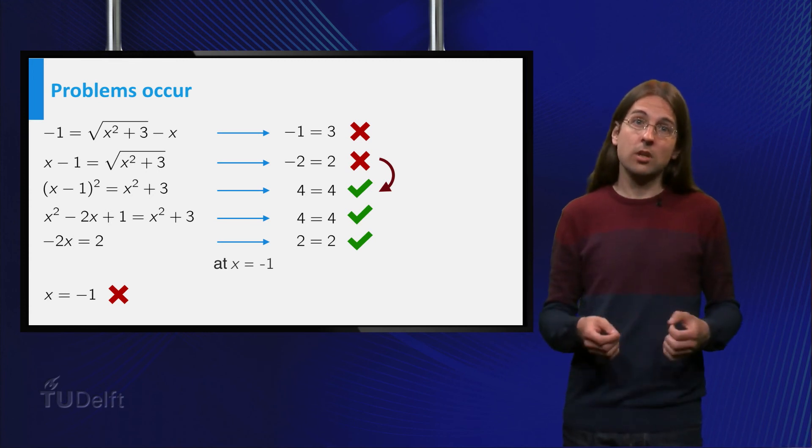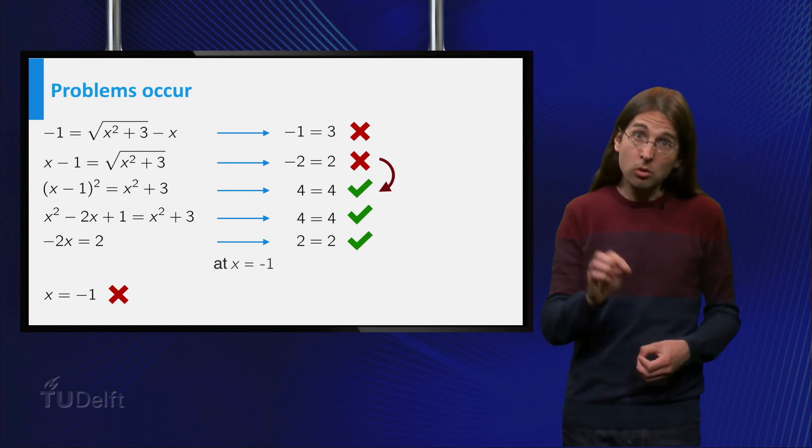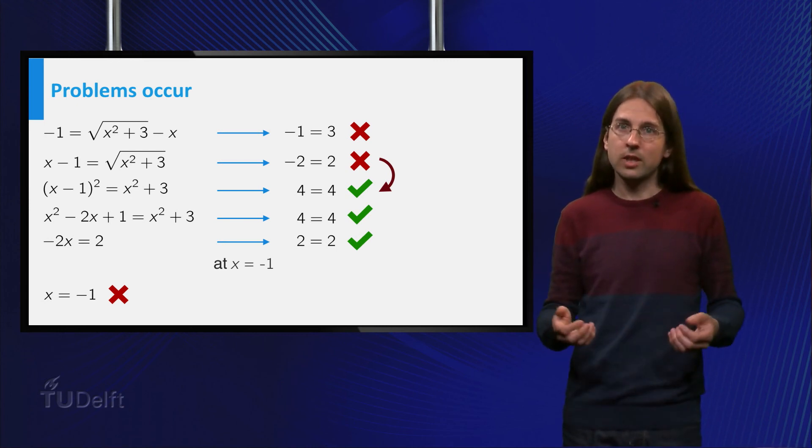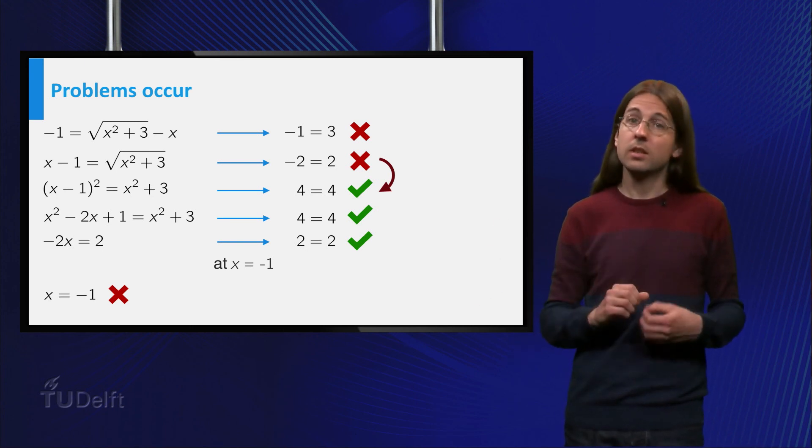Thus any solution to the equation x minus 1 equals square root of x squared plus 3 is also a solution to the squared equation x minus 1 squared equals x squared plus 3. However, the other way around is not true.